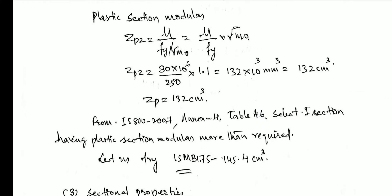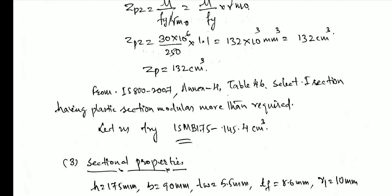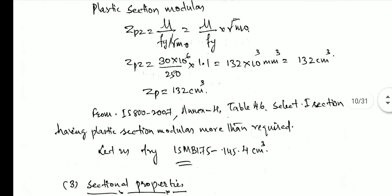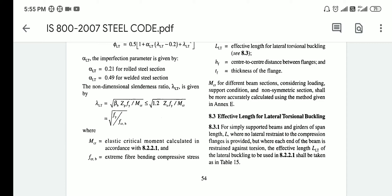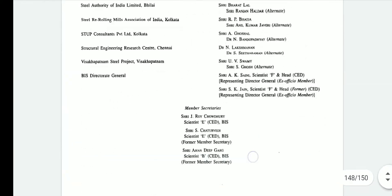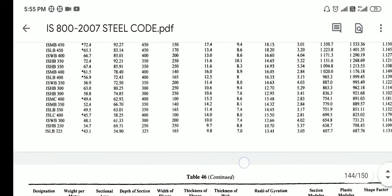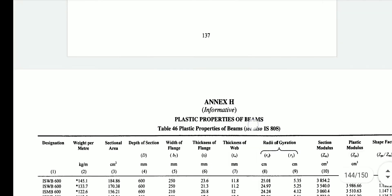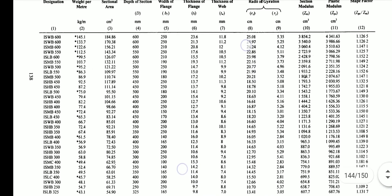From Annexure H (Table 46) of IS 800, we select a section whose Zpz value is greater than 132 cm³. I will refer to the code to show how this is done. Opening IS 800 at page 138 onwards, Table 46 provides different beam designations with their sectional properties.